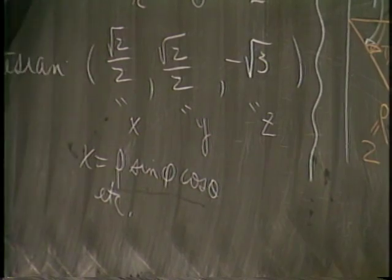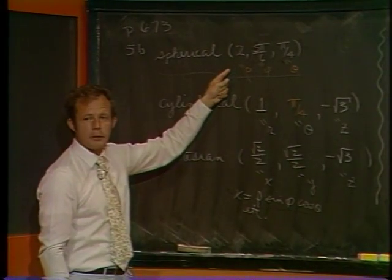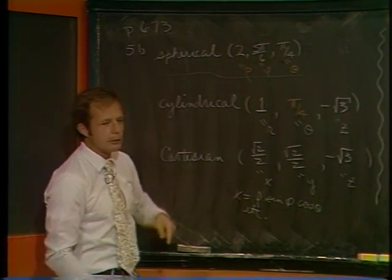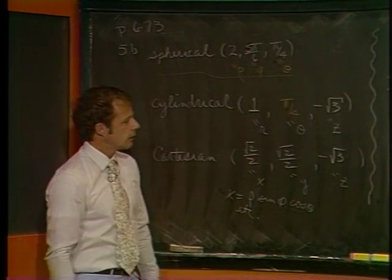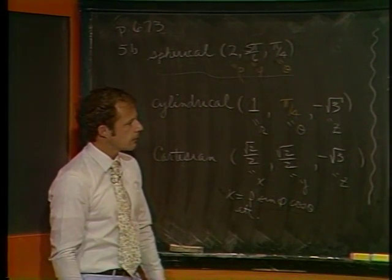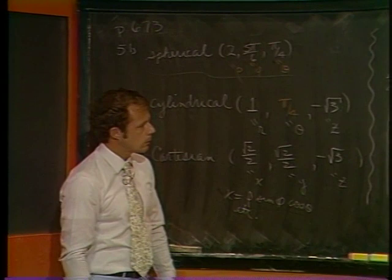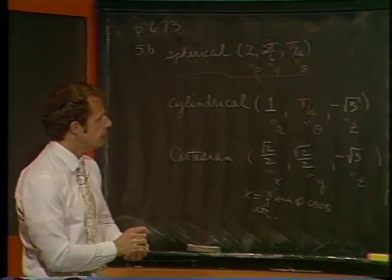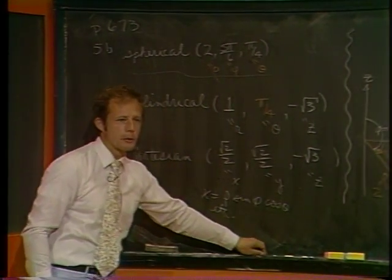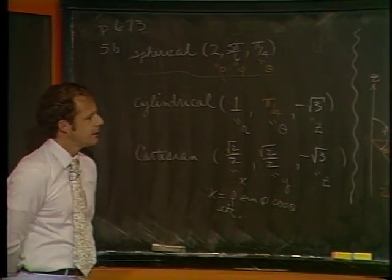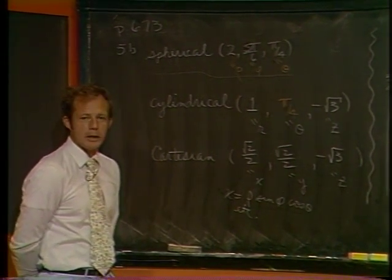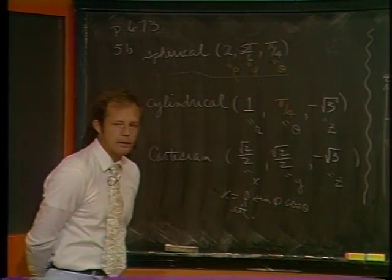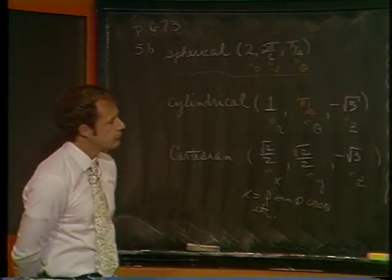Going the other way — from Cartesian back to spherical — is tougher. You have to use inverse trig functions, and it really gets mucked up because you're never sure which inverse trig function to use; you may not be in the right coordinate system. OK, any questions? Let's push on. Let's do a little more of the newer material — let's go over to Chapter 15.